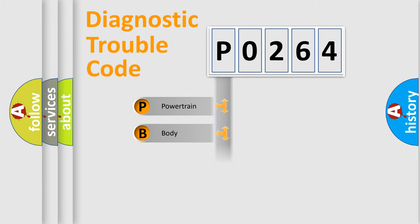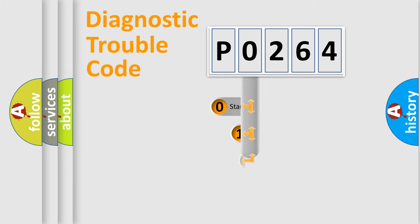Powertrain, Body, Chassis, Network. This distribution is defined in the first character code.